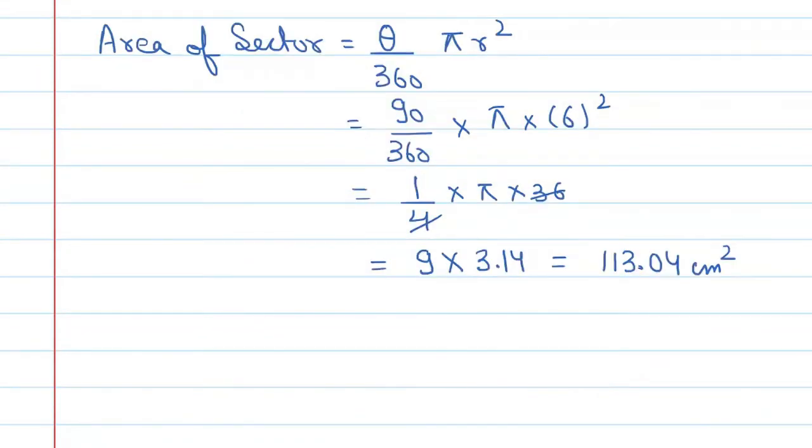But students, before that, we will do one correction. There is a small mistake here. 9 into 3.14, it's not 113.04. So first of all, we will correct it. So 9 into 3.14 will be equal to 28.26. And it is an area of one sector.